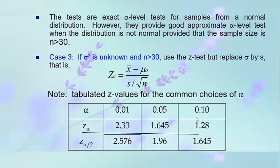For z-alpha at the 0.01 level, the critical value is 2.33; for 0.05 it is 1.645; for 0.10 it is 1.28. For z-alpha/2 at the 0.01 level of significance, the critical value is 2.576; for 0.05 it is 1.96; and for 0.10 it is 1.645.